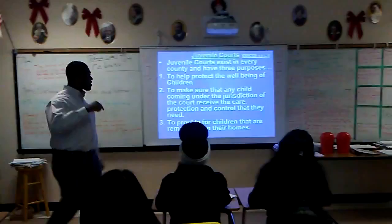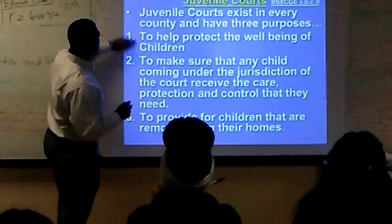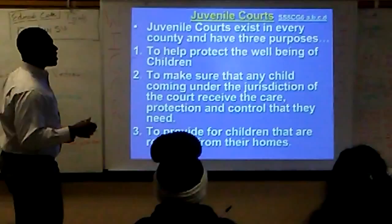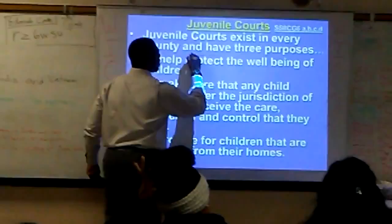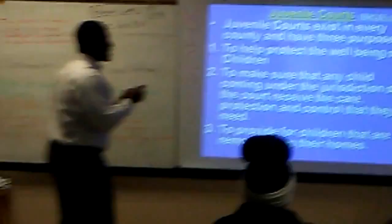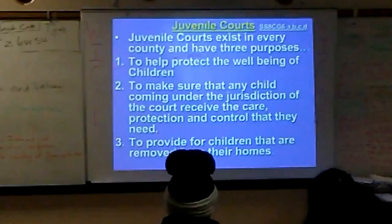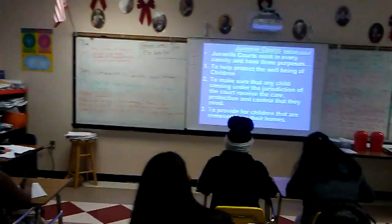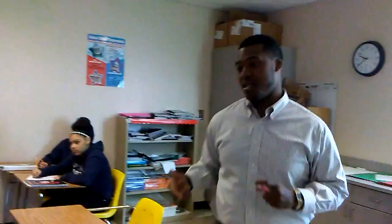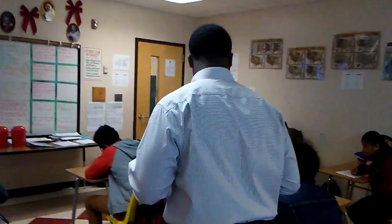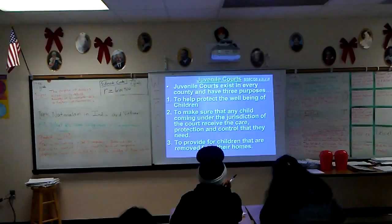Juvenile courts exist in every county and have three purposes. The first purpose is to help protect the well-being of children — the juvenile justice system's number one priority. Number two, to make sure that any child coming under the jurisdiction of the court receives the care, protection, and control that they need. And number three, to provide for children that are removed from their homes.